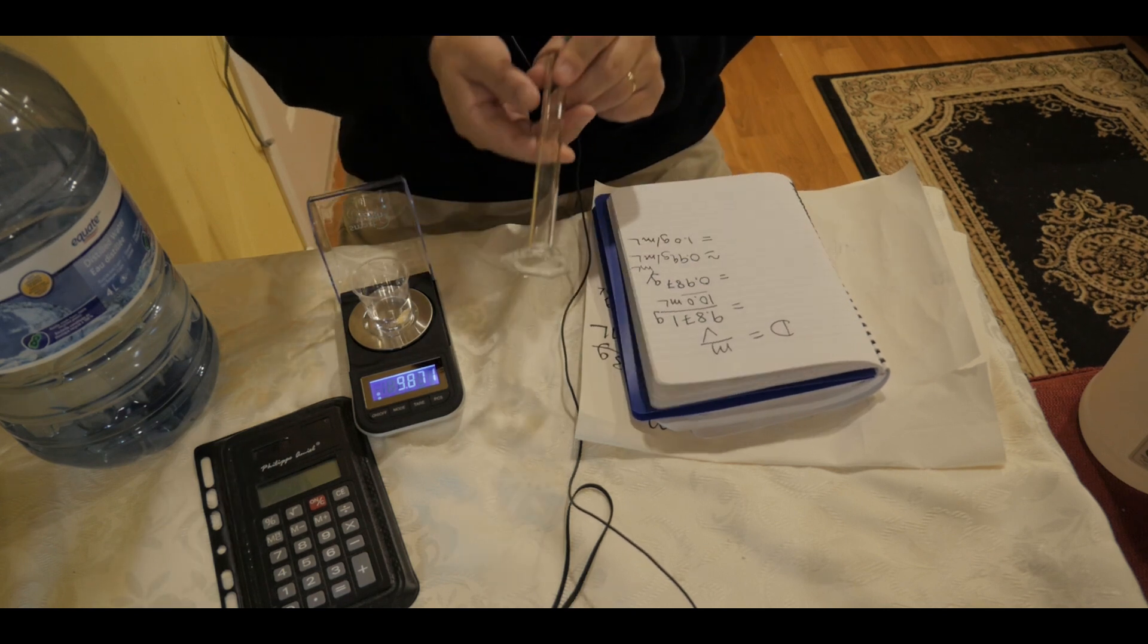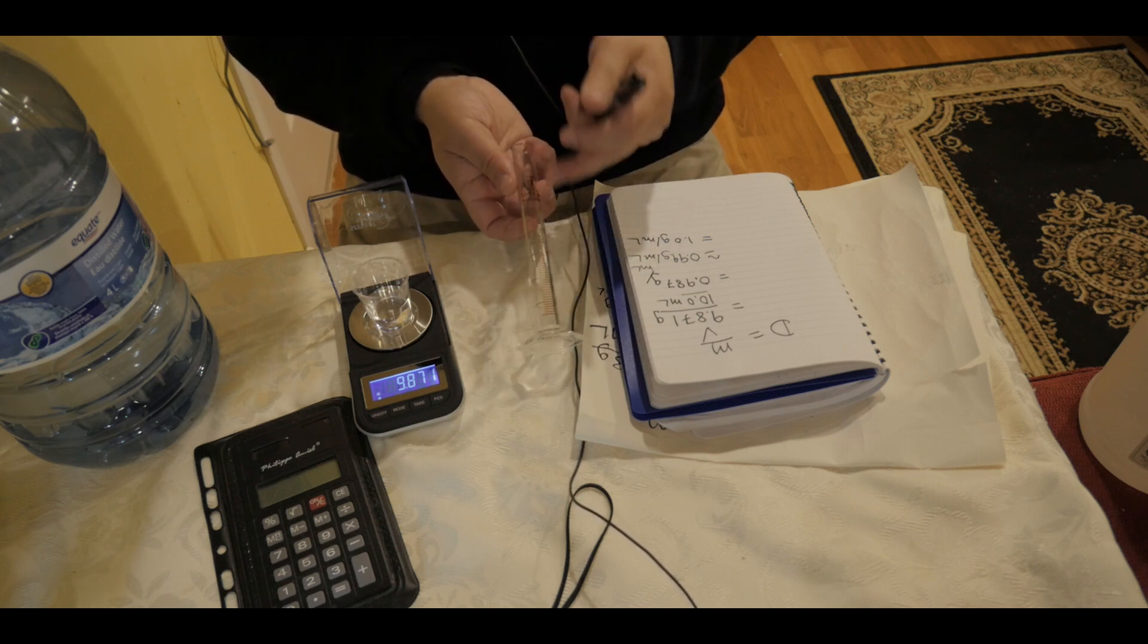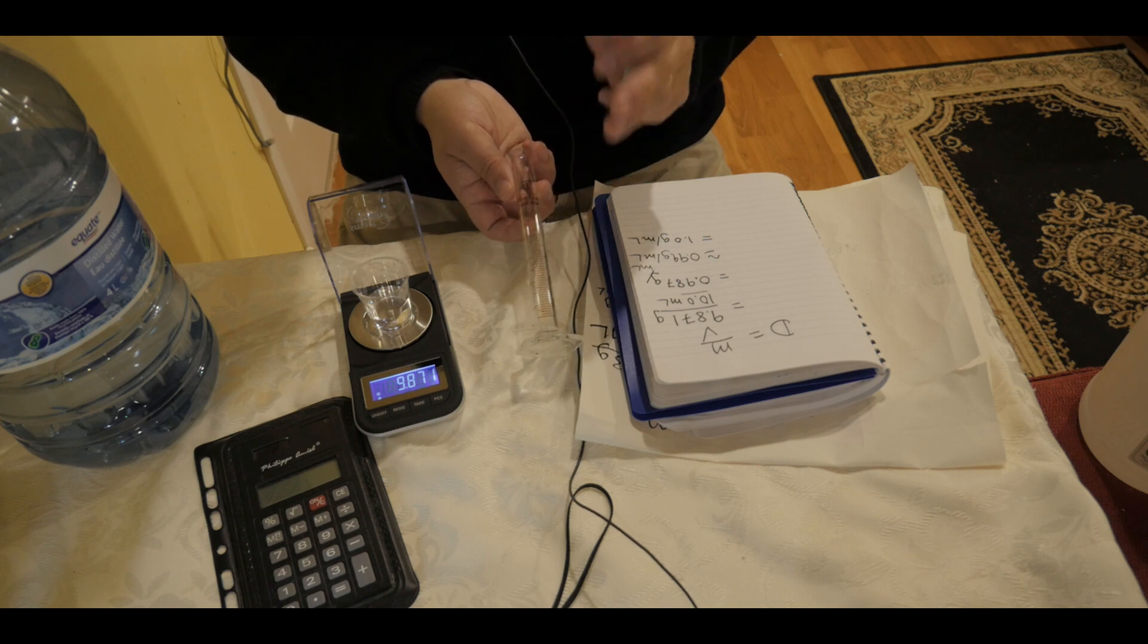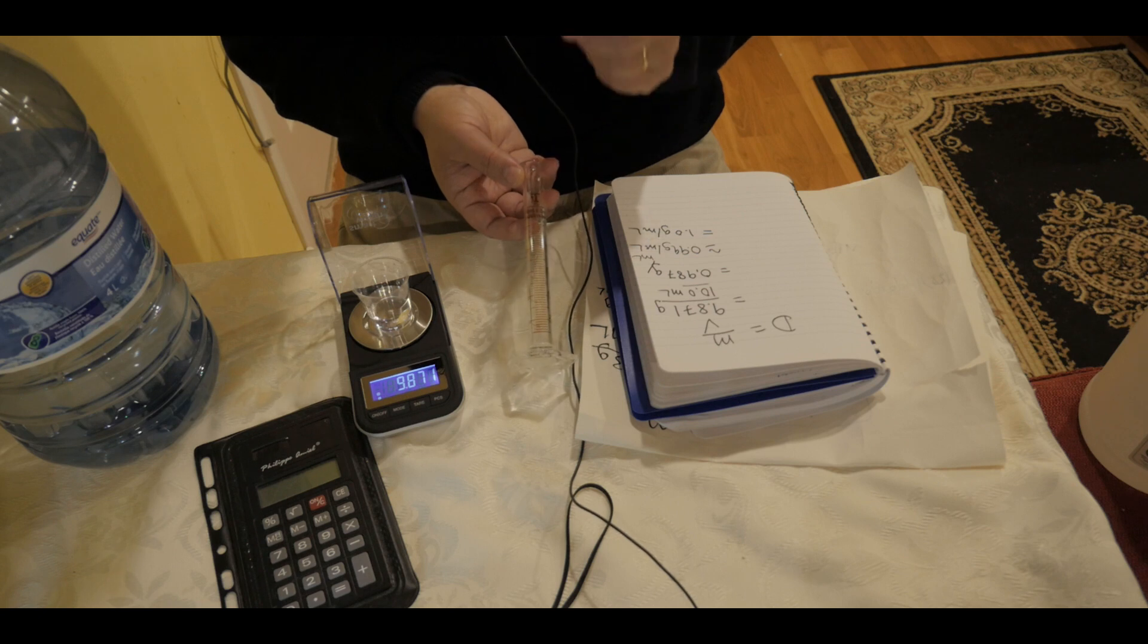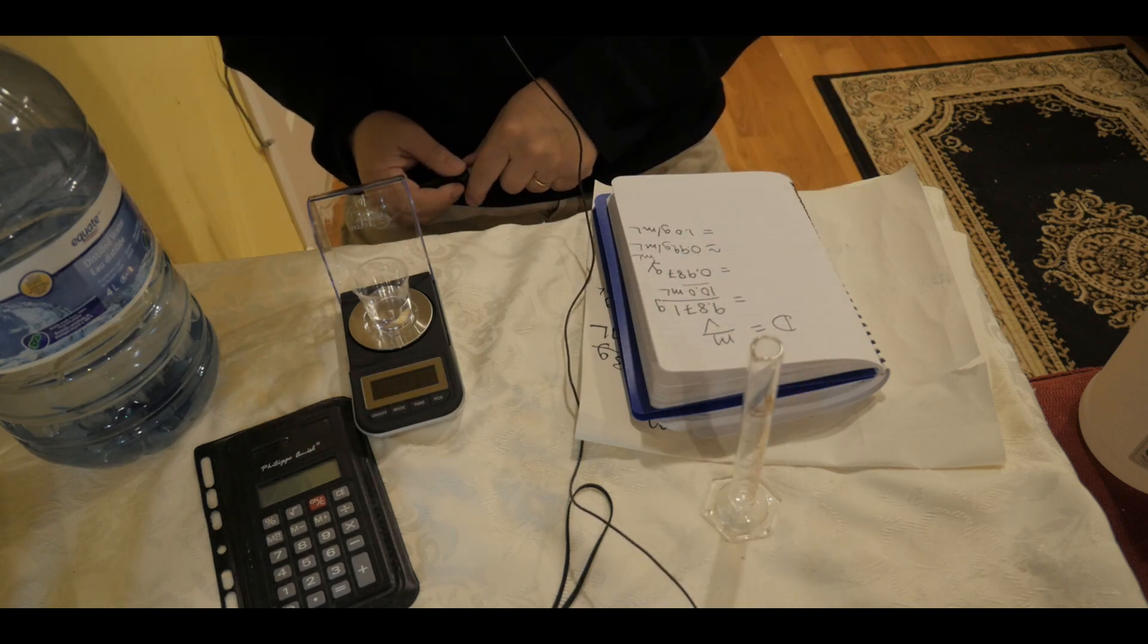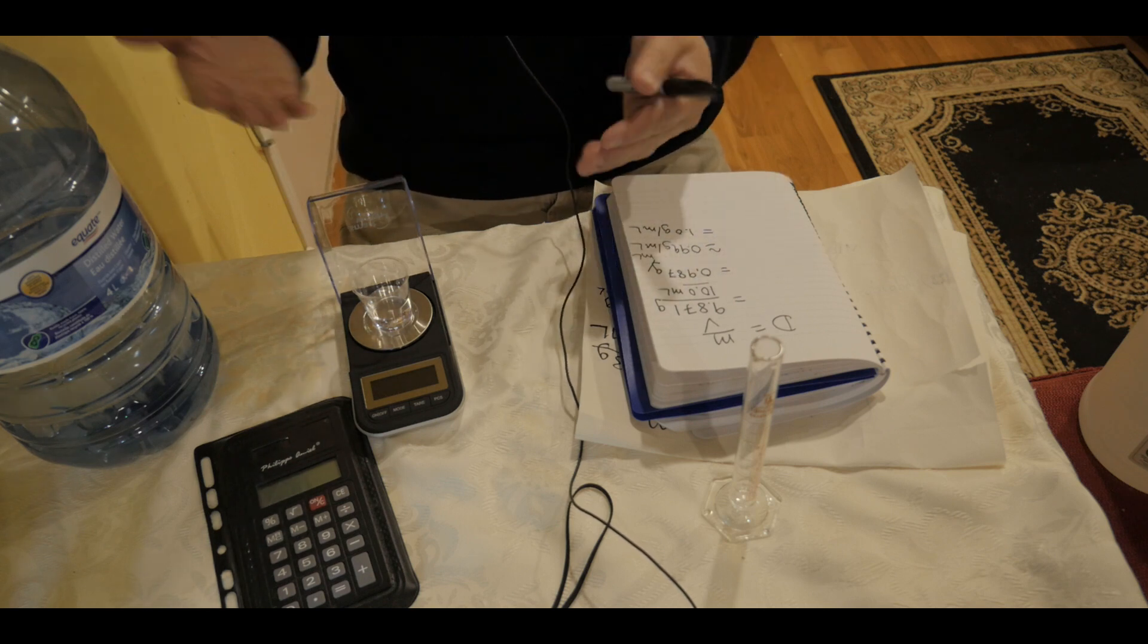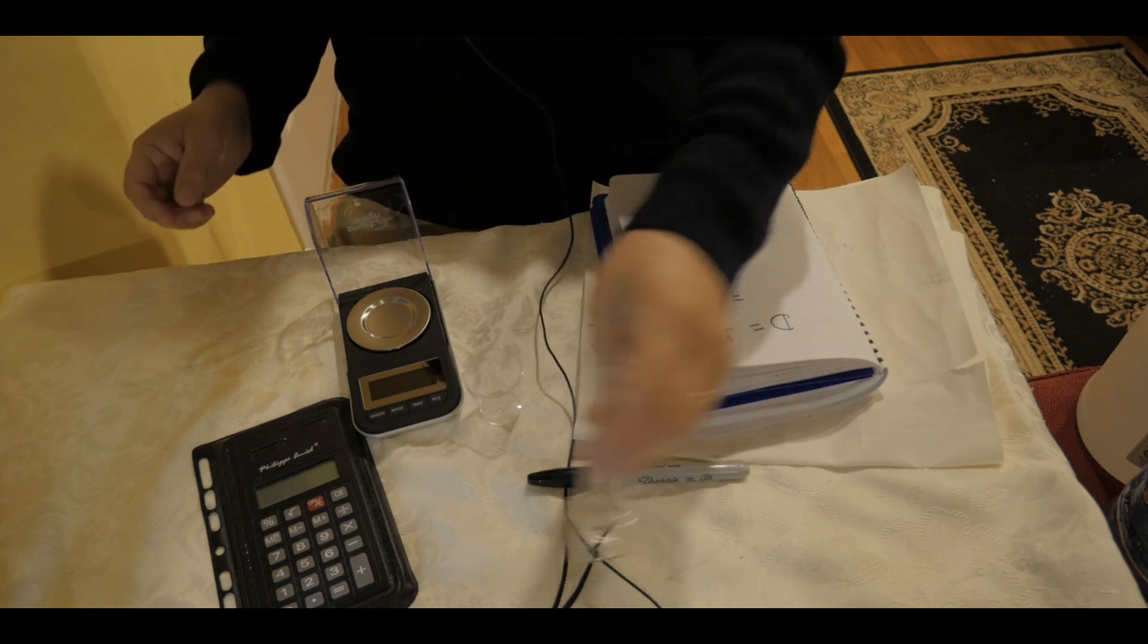So for more precise or accurate measurement, I think I have to maybe change this instrument. This 10 milliliter graduated cylinder plus or minus 0.2, I don't think it's good enough. I might get the volumetric pipette, which is going to be more precise and accurate than this graduated cylinder. But anyway, for now, yes, it's around 0.99 grams per milliliter or 0.987 grams per milliliter. It's the density of this distilled water. Not bad. So let's try olive oil.